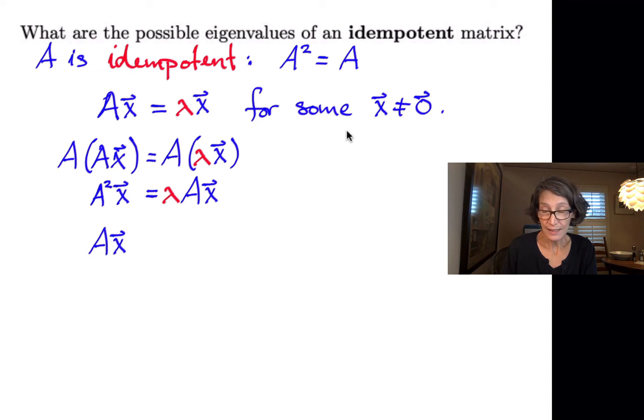On the right, notice we have an A times X, so we can call that lambda times lambda X. Well, notice on the left, we also have an A times X. So that's also a lambda X. So now we have lambda X is equal to lambda squared times X.